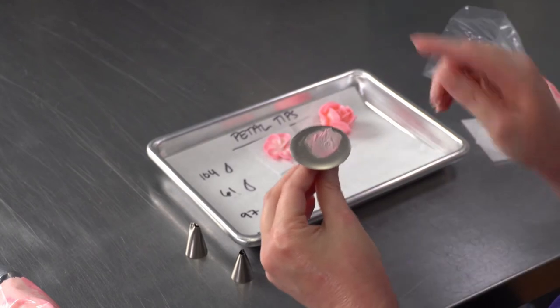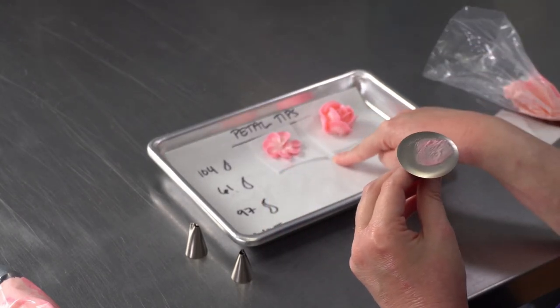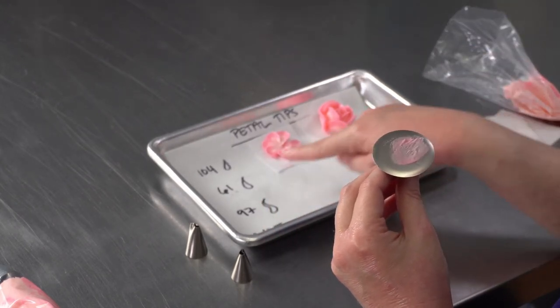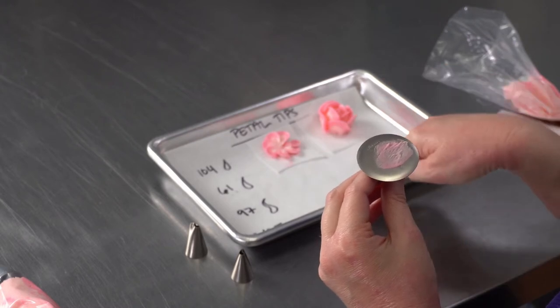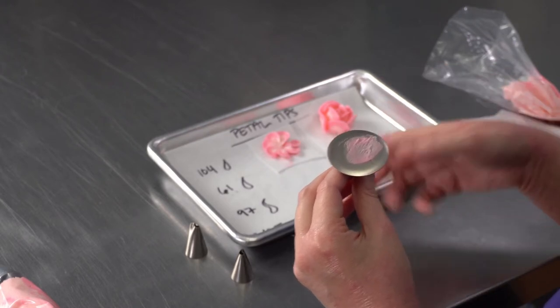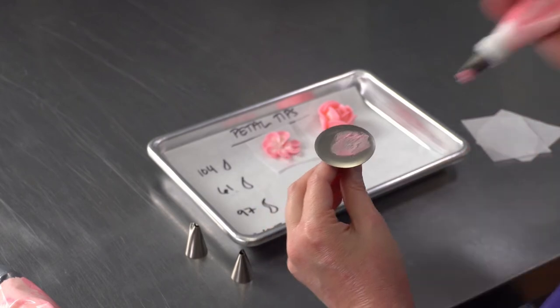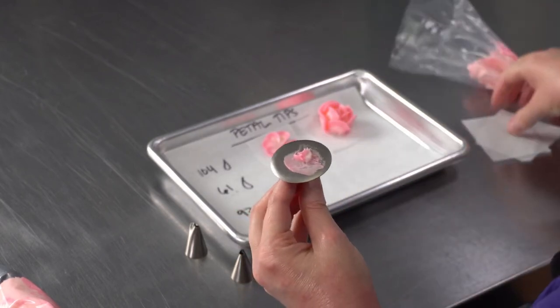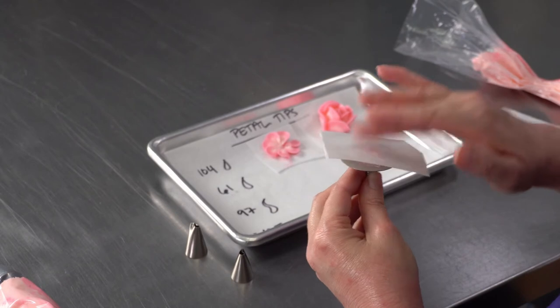And any time you're piping these ahead of time, generally I keep a clean tray out and I'll pipe all my flowers, put them in the refrigerator, and that'll make them set up and they'll be easy to put on top of your cakes. And you can use a spatula or a flower lifter for that.